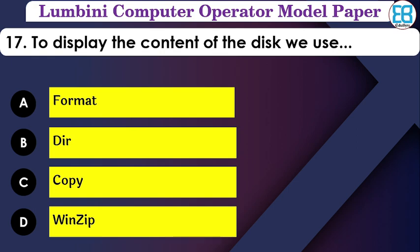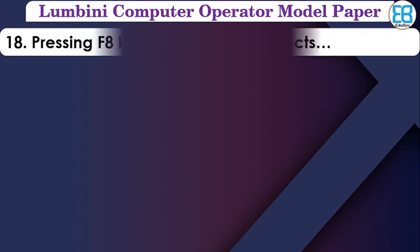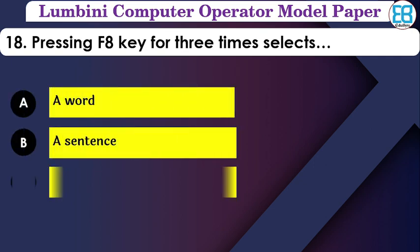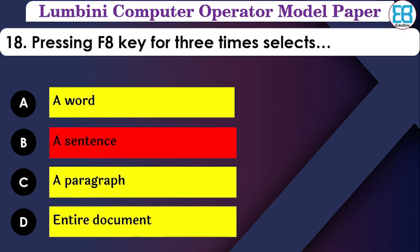Pressing the F5 key three times — what does it select? The options are: a word, a sentence, a paragraph, or the entire document. Pressing F5 three times selects a sentence.